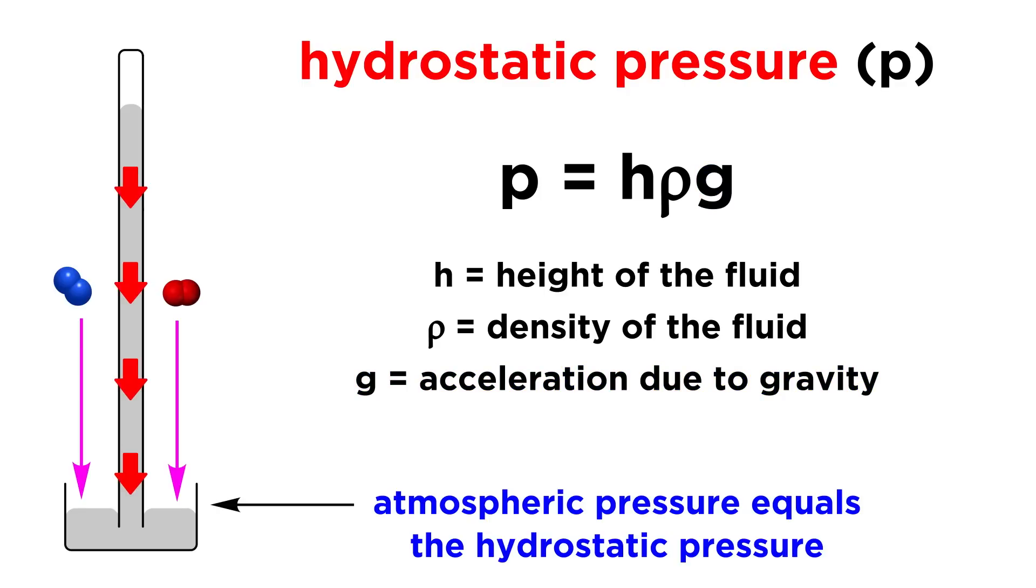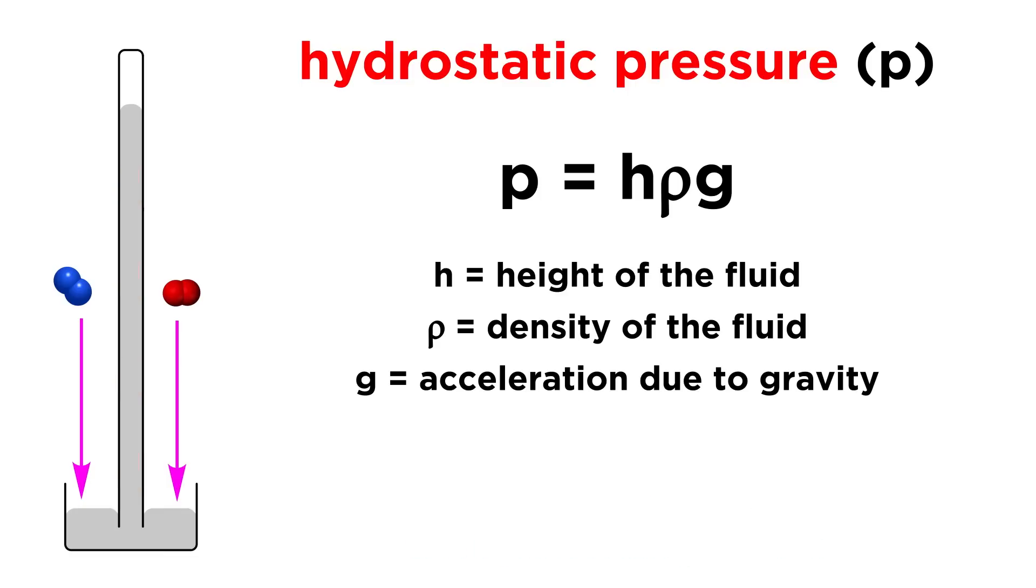In order to support a column of fluid of a particular height, the atmospheric pressure will have to equal the hydrostatic pressure. We can see that this equation will accurately predict the atmospheric pressure necessary to support a column of mercury of a particular height if we plug in some known values.